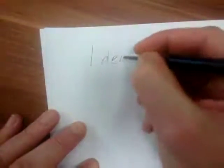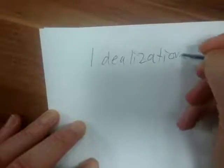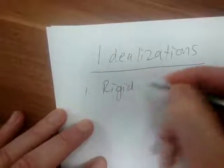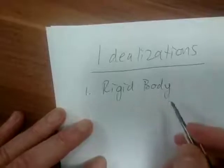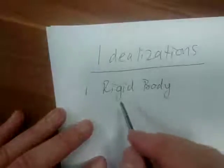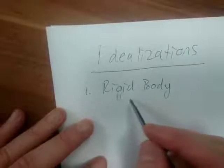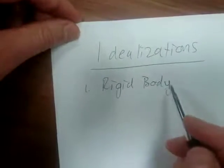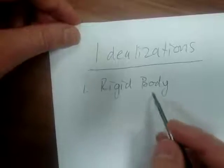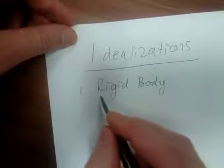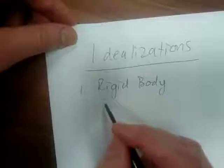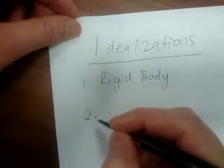Now let's talk about idealizations. The first idealization is the rigid body, which we've already discussed. In reality, no body is truly rigid — all bodies deform. But if we're dealing with steel, solid wood, or some material where applied forces cause hardly any deformation, we can assume the body is rigid.